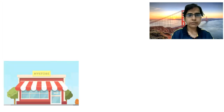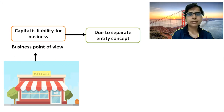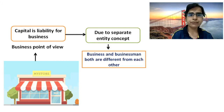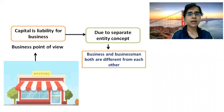From the business point of view, capital is a liability for the business. This is because of the separate entity concept, which tells us that the business and the businessman are different from each other. Business is a different entity and the businessman is a different person. That is why capital is treated as a liability for the business.